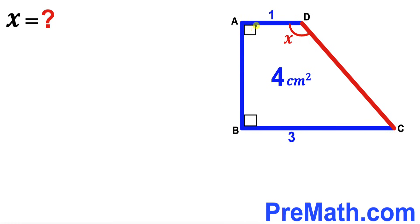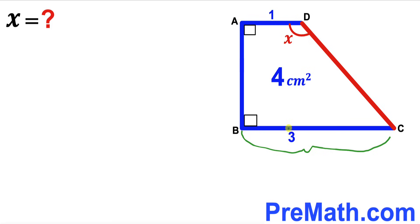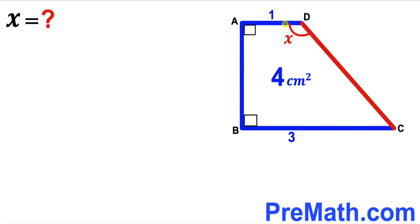Welcome to pre-math. In this video we have this trapezoid ABCD, where base AD is one centimeter, base BC is three centimeters, the area of this trapezoid is four centimeters square, and angle ADC is represented as x, whereas these other angles are 90 degrees. Our task is to find the value of angle x.